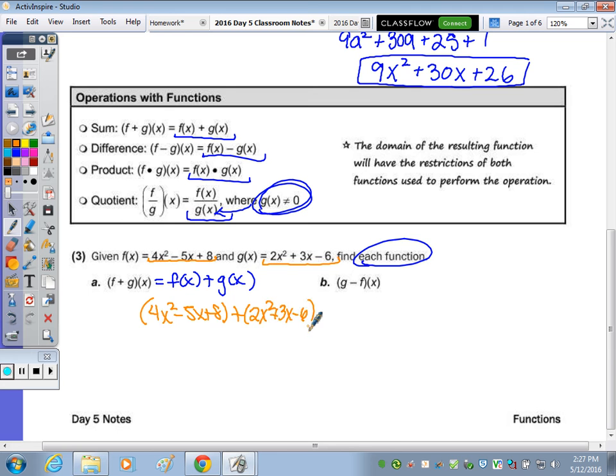So we actually substitute the trinomial in for the function. So it's just adding two trinomials, which is combining like terms. 4X squared and 2X squared is 6X squared. Negative 5X plus 3X is a negative 2X. And a positive 8 plus a negative 6 is a positive 2.